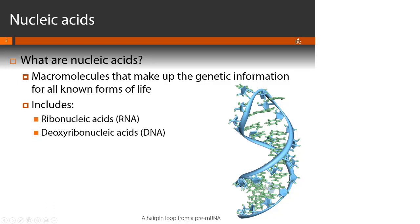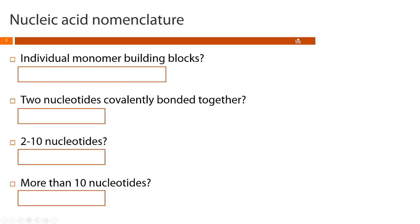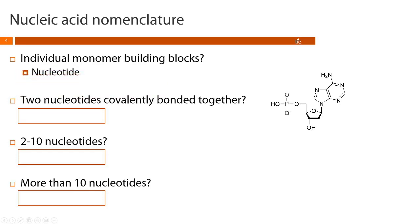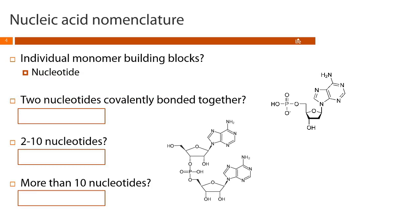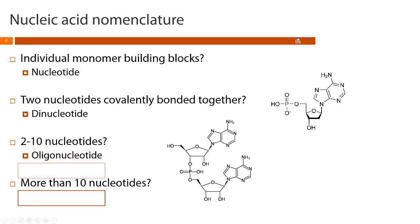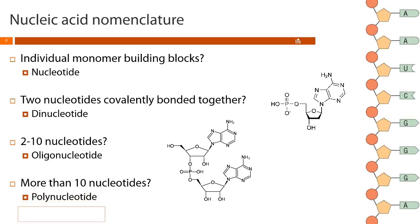This includes both ribonucleic acids (RNA) and deoxyribonucleic acids (DNA). We're going to learn to talk about nucleic acids using polymer notation. The individual monomer building blocks are nucleotides. Two nucleotides covalently linked form a dinucleotide. Two to ten nucleotides would be an oligonucleotide, and more than ten nucleotides would form a polynucleotide.